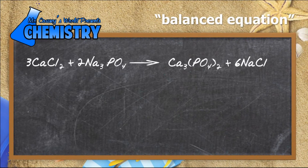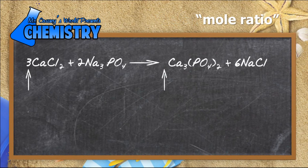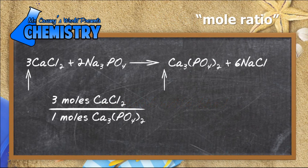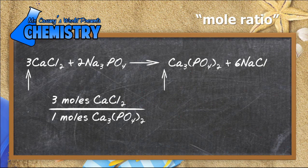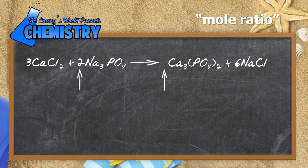Here's our balanced equation—check that out. One of the first things we do now is look at our mole ratios. There are three moles of calcium chloride for every one mole of calcium phosphate, so our ratio is 3 moles CaCl2 to 1 mole Ca3(PO4)2. Then there are two moles of sodium phosphate for every one mole of calcium phosphate, so it's a 2 to 1 ratio.